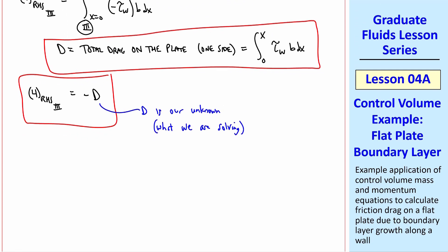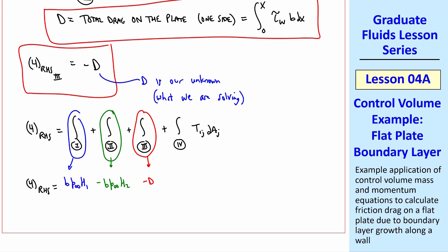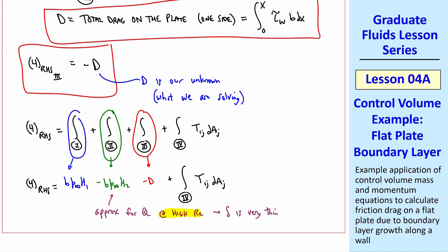Summing all RHS integrals: b p∞ H₁ (surface 1) − b p∞ H₂ (surface 2) − D (surface 3), plus the integral over surface 4. The approximation for surface 2 is valid for a high-Reynolds-number laminar boundary layer where δ is very thin — the larger the Reynolds number, the thinner the boundary layer and the better the approximation.